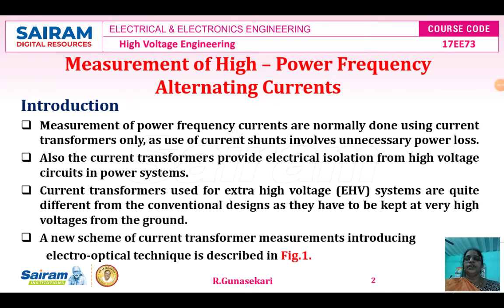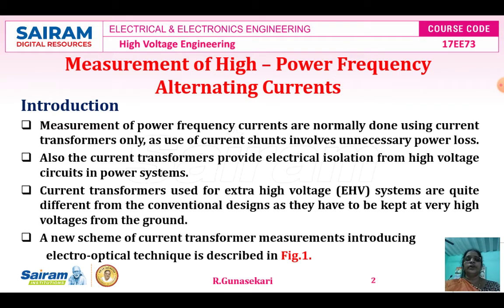We studied the introduction to measurement of high power frequency alternating currents. The measurement of power frequency current is normally done using current transformers only. The use of current shunts involves unnecessary power losses in the measurement of high power frequency AC current.